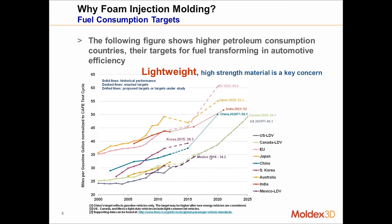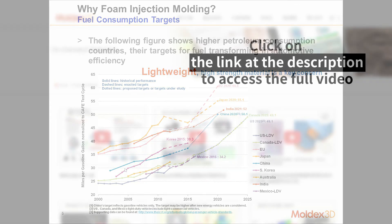Just an overview of the foaming process — why do we use this traditionally in the industry? A lot of the larger automotive companies are moving towards this foam injection molding process in order to lightweight their parts, and this process also gives very high strength.